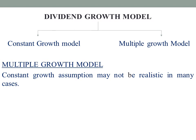In this case we have an extraordinary growth phase, and we have a constant growth phase. So in these two phases, one company has a dividend and it is not constant — it varies. So this model is called the multiple growth model.